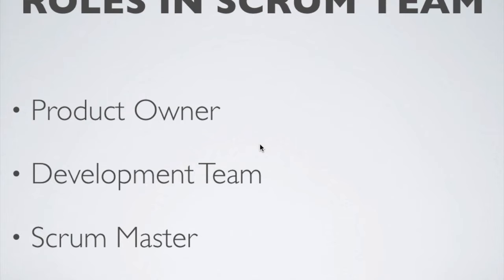The key idea around Scrum teams is that the members are self-organizing and cross-functional. Self-organizing teams don't need micromanagement or direction to do what they are supposed to do, as long as you have hired the right individuals. Because they are cross-functional, they have the technical abilities to work on the solution and figure out the best possible way to implement and deliver the product.